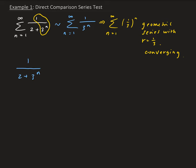So now we want to show that the sequence part from the original series is less than the sequence part from the series that resembles the original. So this is going to be one over three to the n.